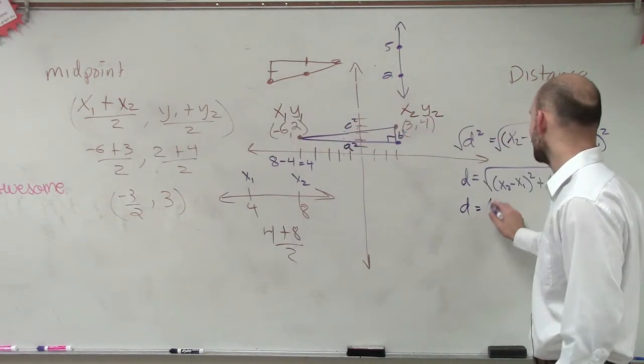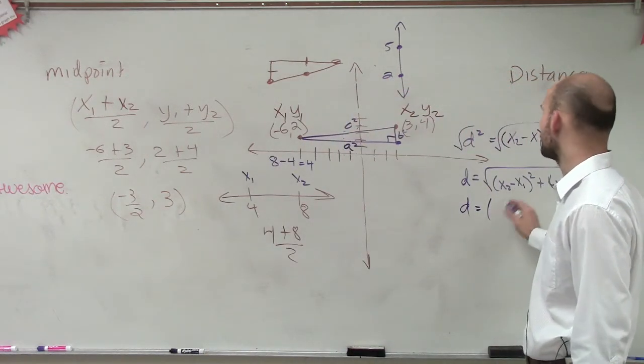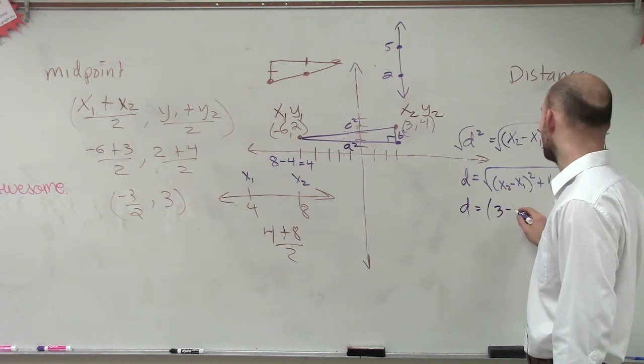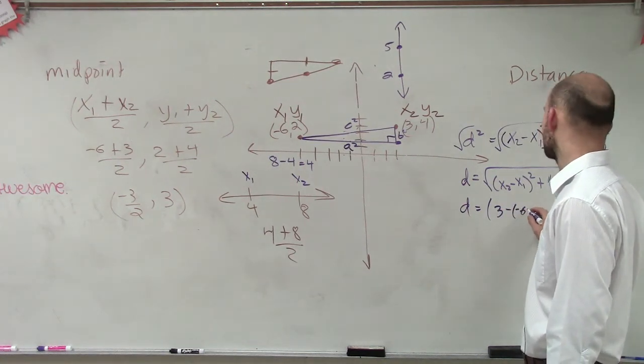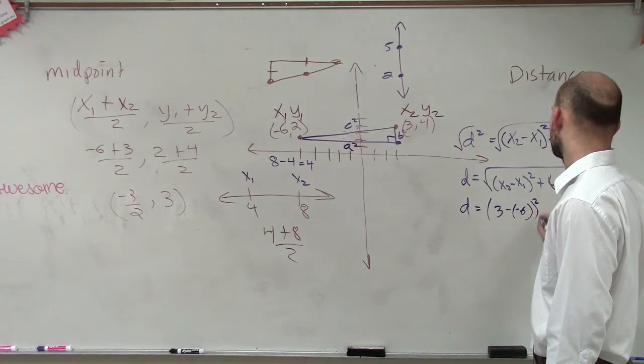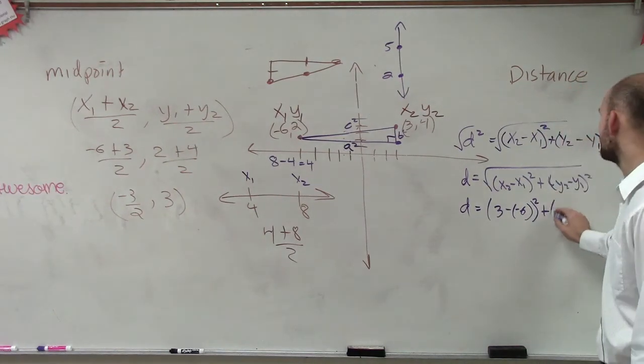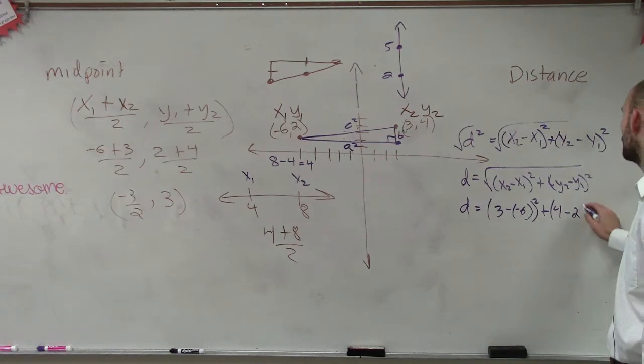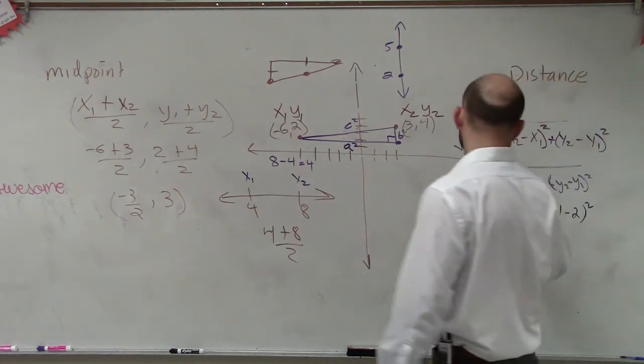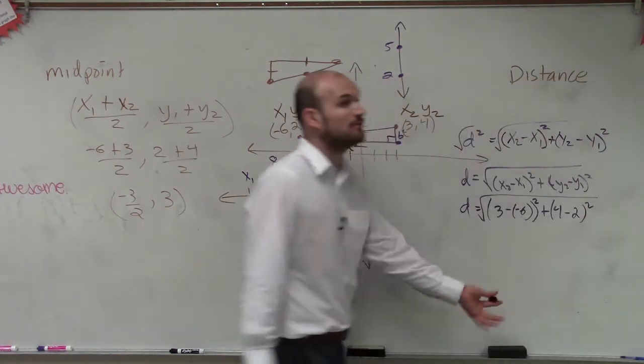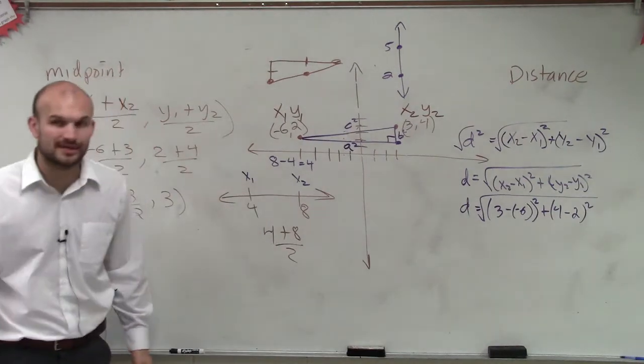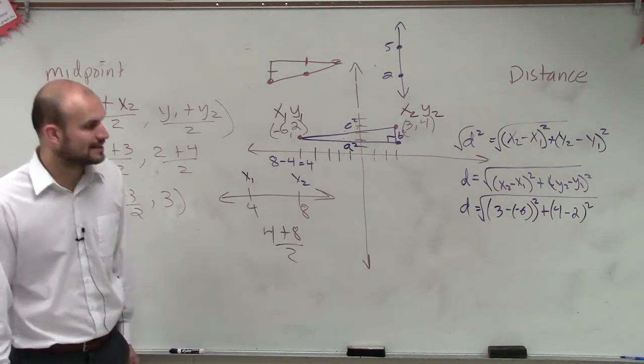So we say the distance for these points, x2 is 3 minus x1, which is negative 6, squared, plus y2, which is 4, minus y1, which is 2, squared. Right? So now once we know the formula, we can just plug in x1 and x2, and y1 and y2.